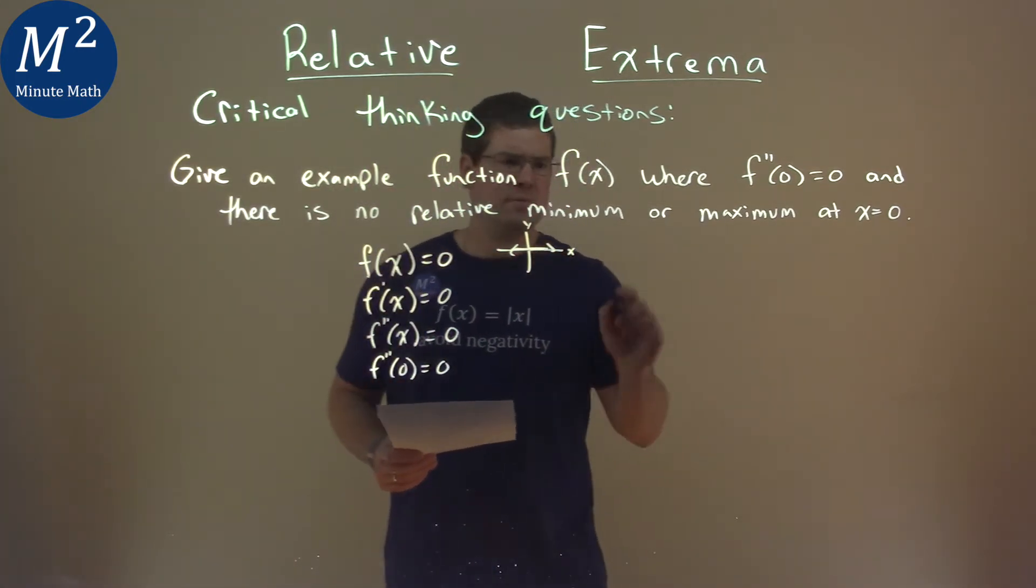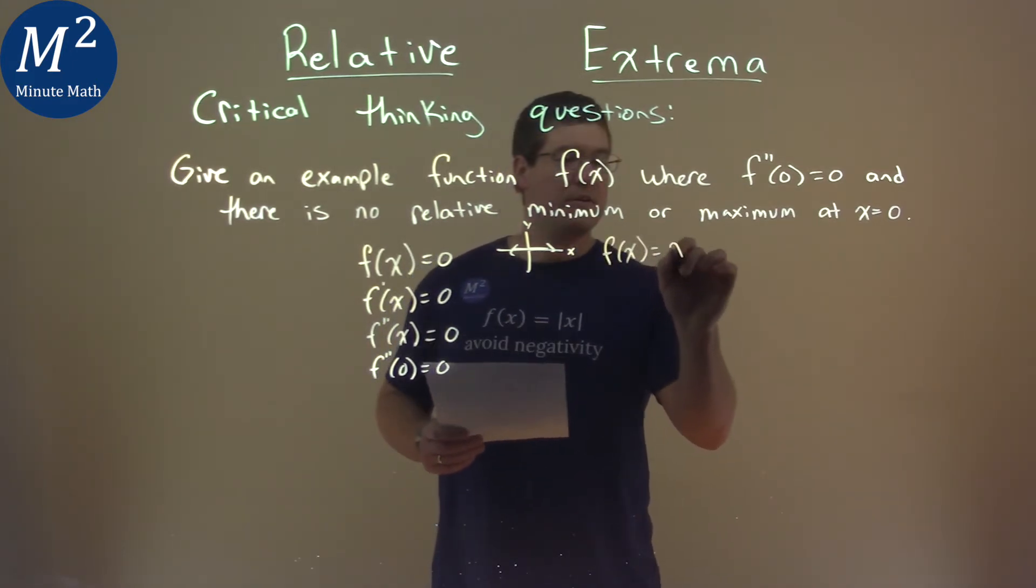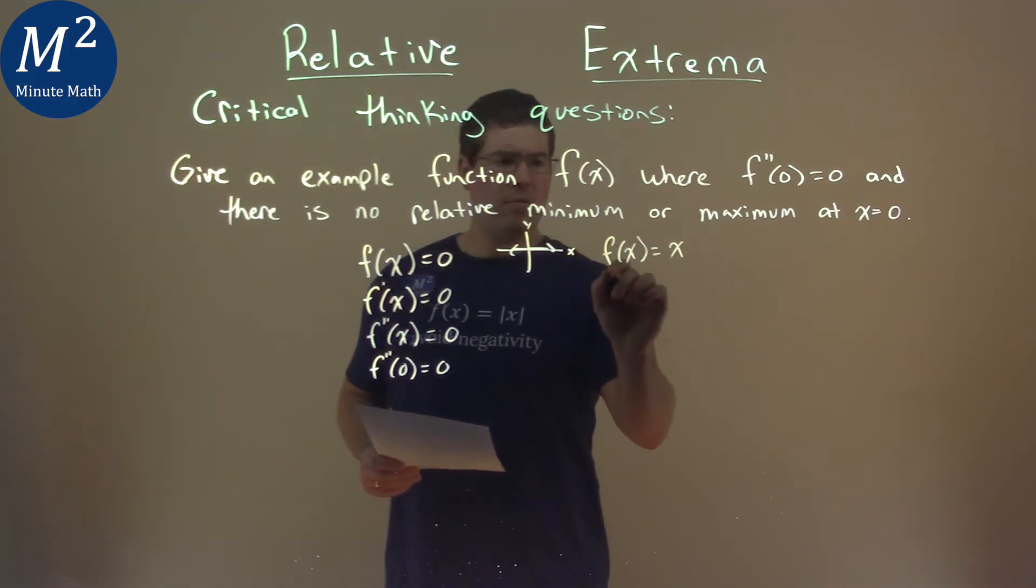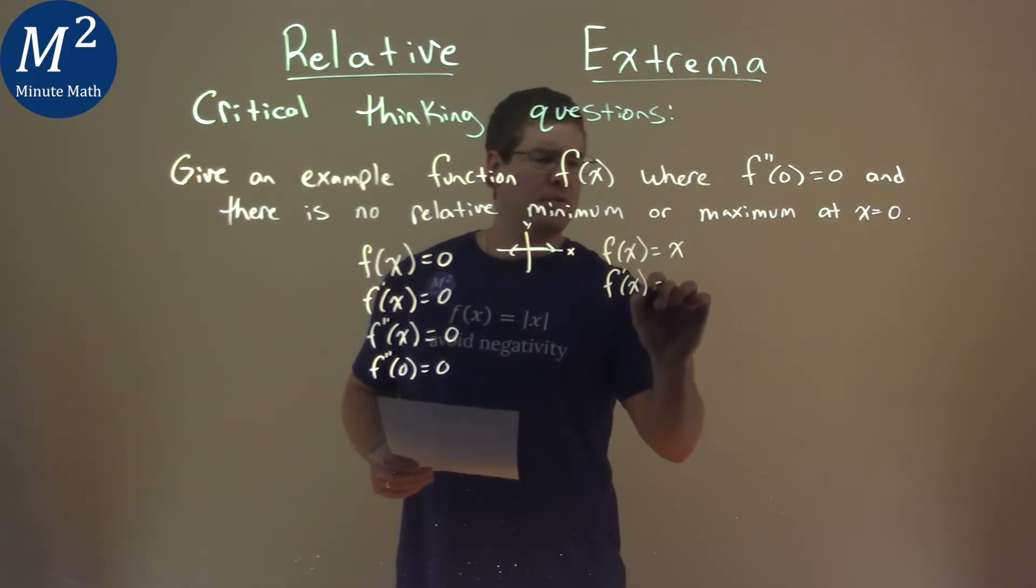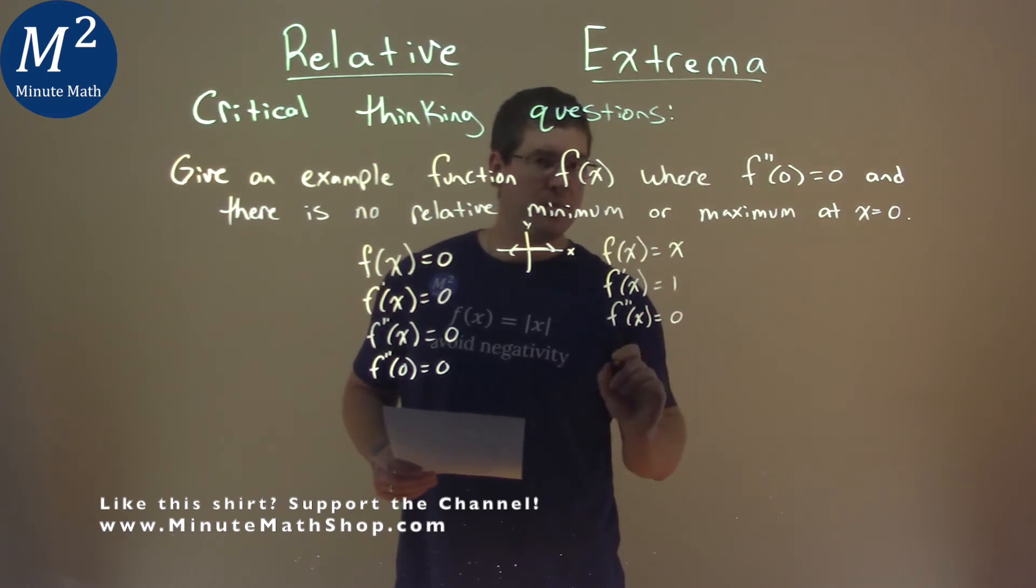What about another one? f of x equals x here. Well, f prime of x is equal to 1, and f double prime of x is equal to 0, and if you plug 0 into the second derivative, again, we get 0 here.